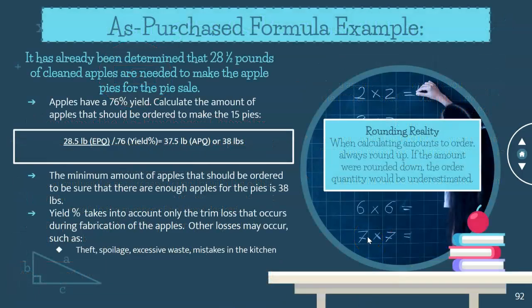Here is an example. It has already been determined that 28.5 pounds of cleaned apples are needed to make the apple pies for the pie sale. Apples have a 76% yield. Calculate the amount of apples that should be ordered to make the pies. In this case, you are provided the EPQ — you need 28.5 pounds of peeled and cored apples — and you're going to divide that by the yield percent, which is provided to you, expressed as a decimal: 0.76.